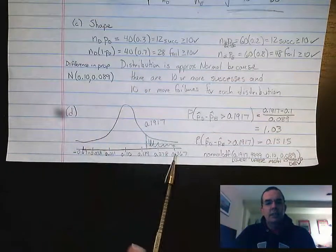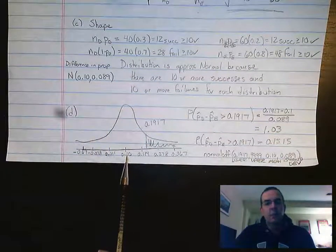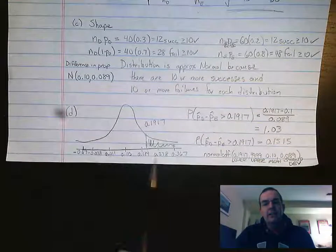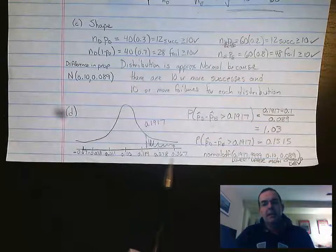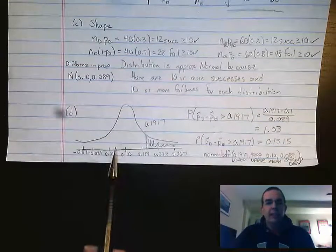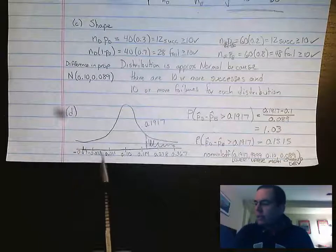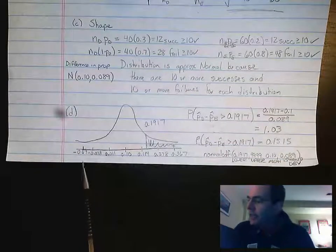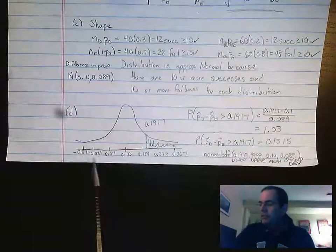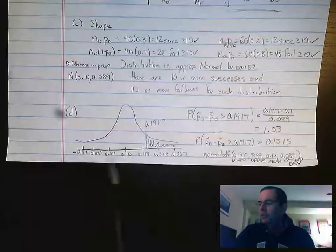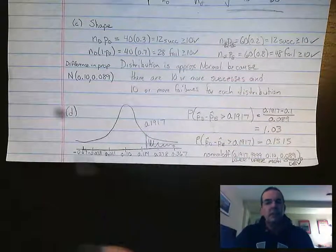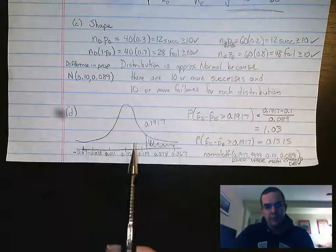I drew the curve down here centered at 0.1. I added those standard deviations of 0.089, three of them to the right, and subtracted them to go to the left. So I have a range from negative 0.167 to positive 0.367. This is our sampling distribution of differences.